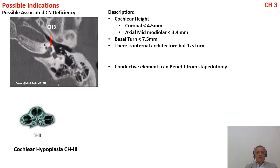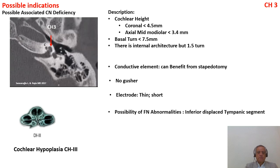In cochlear hypoplasia 3 and 4, the problem is fixation of the stapes, whereas in cochlear hypoplasia 2 and IP1 it is a defect in the stapes footplate leading to recurrent meningitis. In type 3 there is no gusher because there is a modulus. The electrode can be thin and short with a stopper, and all cochlear hypoplasias have the possibility of inferiorly displaced facial nerve abnormalities. All possible indications also have the possibility of cochlear nerve deficiency.